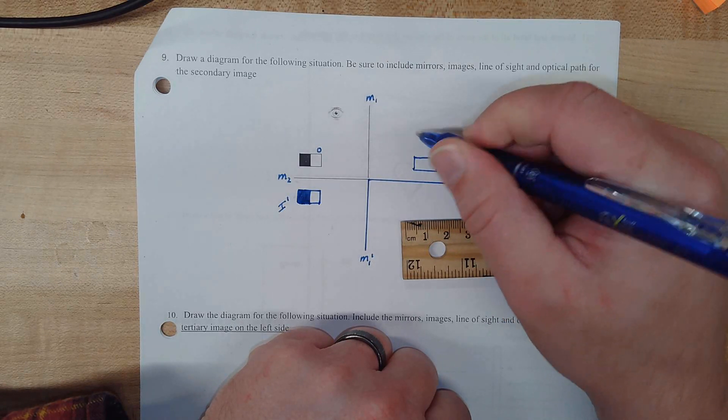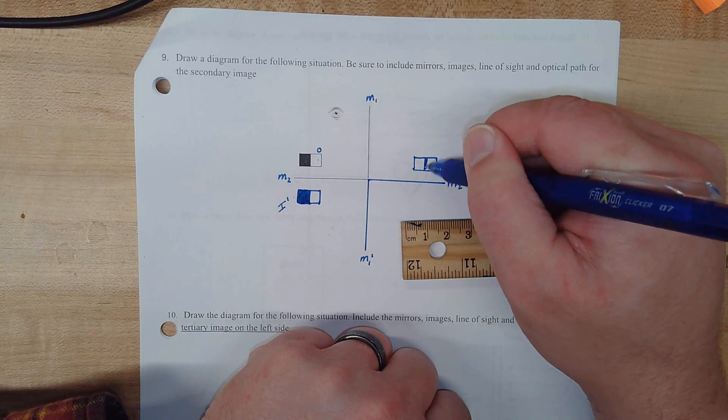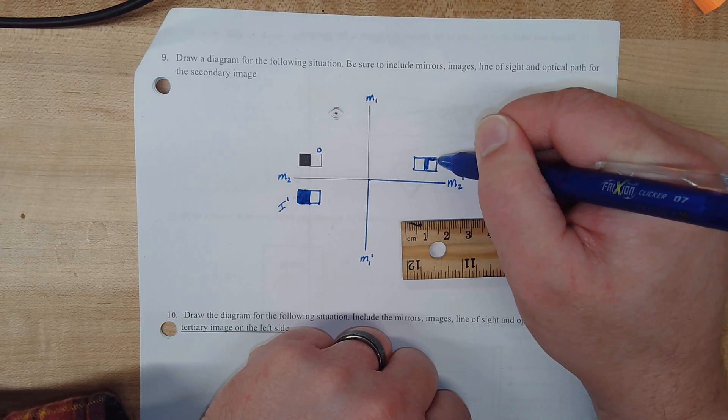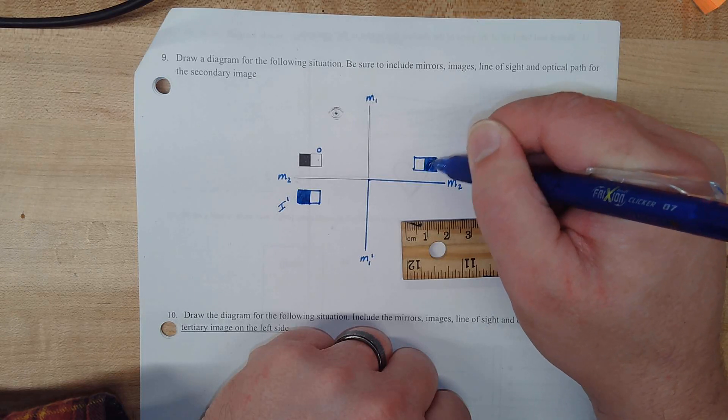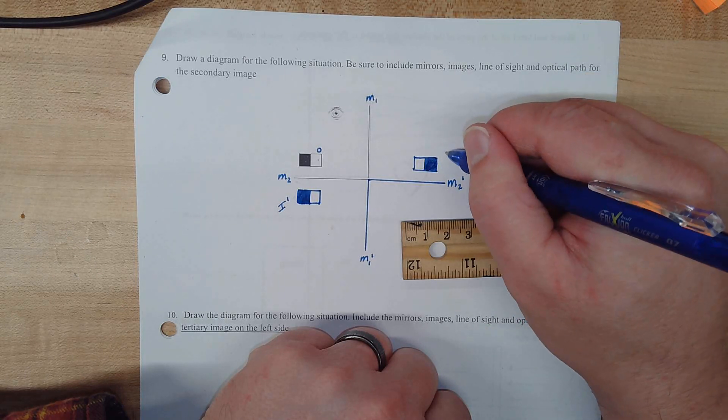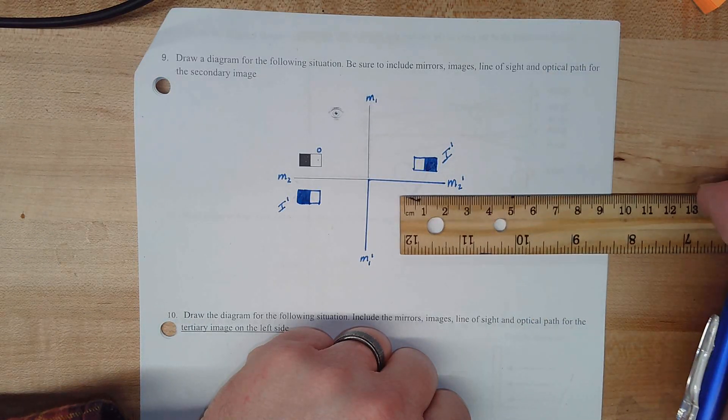Again, I'm just measuring a little bit to give myself some level of precision with my drawings. Now, here, when I reflect it, the white side faced the mirror, so I'm going to get the white side of my reflection facing the mirror. The dark side was away from the mirror, so the dark side is going to remain away from the mirror. This also is a primary image of our original object. A first reflection.